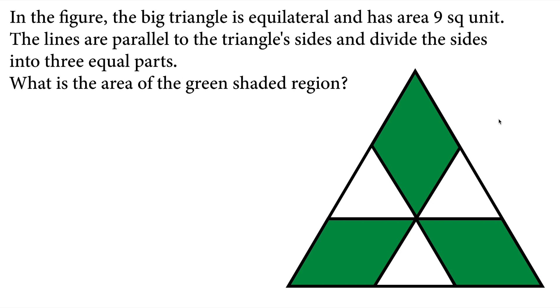Hi there. In this video, we will solve this Math Olympiad question. Let's read the question. In the figure, the big triangle is equilateral and has area of 9 square units. The lines are parallel to triangle sides and divide the sides into 3 equal parts. What is the area of the green shaded region?